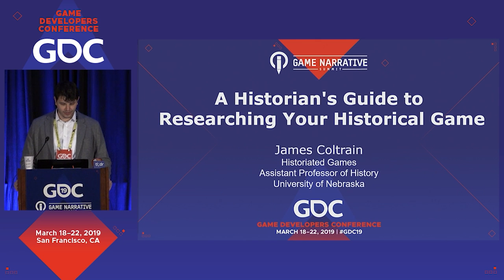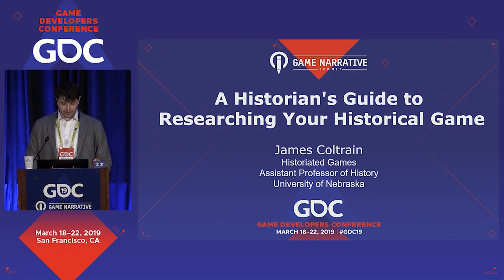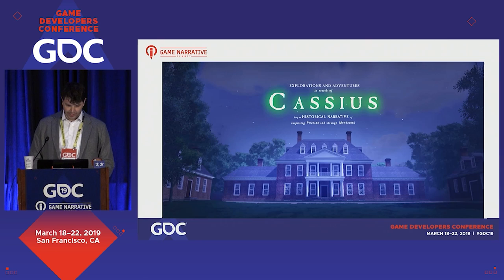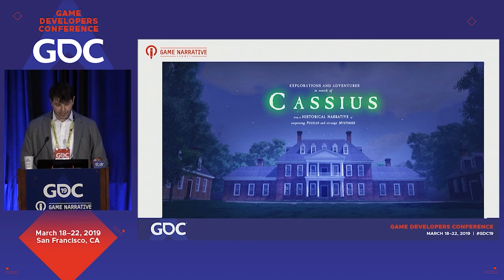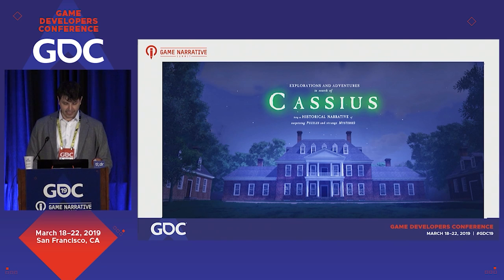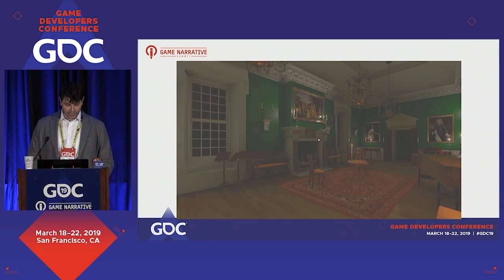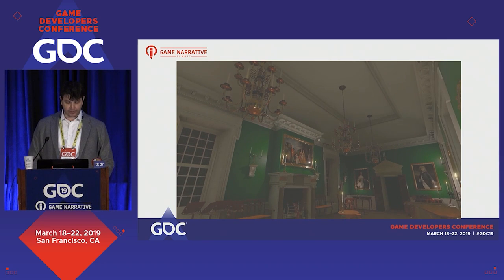Thanks for coming to my talk, 'A Historian's Guide to Researching Your Historical Game.' My name is James Coltrane. I'm an assistant professor of history at the University of Nebraska, and I'm also a game developer. I'm currently working as a solo dev on a first-person narrative exploration game called Cassius, in which players explore an evacuated plantation estate during the American Revolution to confront our memory of the Founding Fathers and their relationship with colonial slavery.